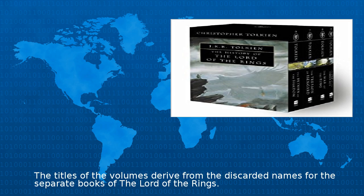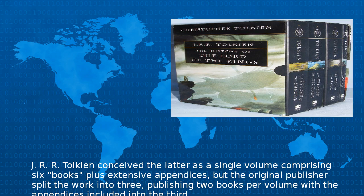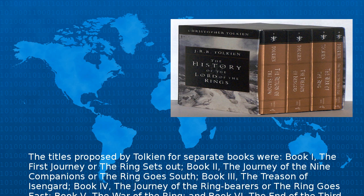The titles of the volumes derive from the discarded names for the separate books of The Lord of the Rings. J.R.R. Tolkien conceived the latter as a single volume comprising six books plus extensive appendices, but the original publisher split the work into three, publishing two books per volume with the appendices included in the third. The titles proposed by Tolkien for separate books were: